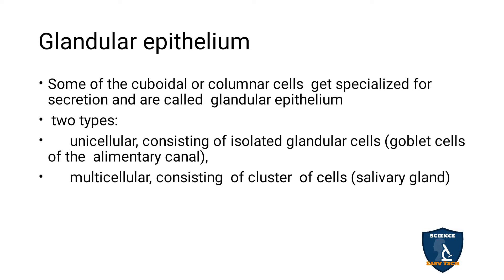There are two types of glandular epithelium. Unicellular, consisting of isolated gland cells — that is, goblet cells of the alimentary canal which secrete mucus. Multicellular, consisting of a cluster of cells — that is, salivary glands.